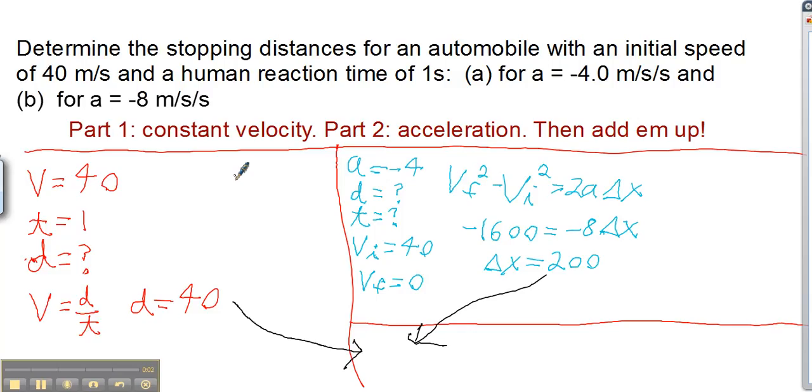Here we have a problem that combines constant velocity with acceleration. It says determine the stopping distances for an automobile with a starting speed of 40 m/s and a human reaction time of one second, so one second goes by before you hit the brakes.